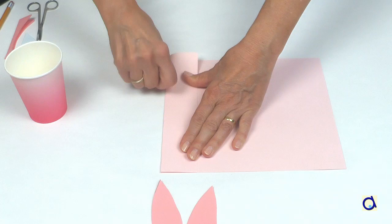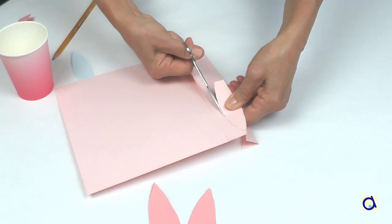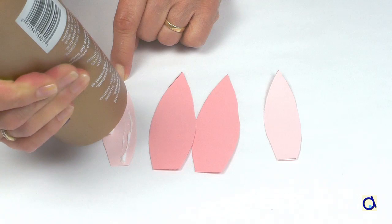For the inside of the ears, take the other colour of construction paper and fold part of the sheet. Take the pattern B, draw the outline of the pattern with a pencil, and then cut out both layers of construction paper. You now get two copies of the insides of the ears.